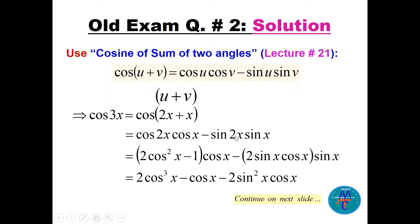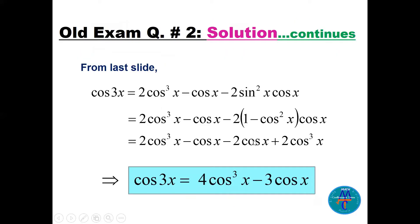We get cos(2x)cos(x) minus sin(2x)sin(x). For cos(2x) we choose the formula that has cos(x): 2cos²(x) − 1, and multiply by cos(x). For sin(2x) there is one formula: 2sin(x)cos(x), multiplied by sin(x) giving sin²(x). Distributing: 2cos³(x) minus cos(x) minus 2sin²(x)cos(x). We replace sin²(x) with 1 − cos²(x).